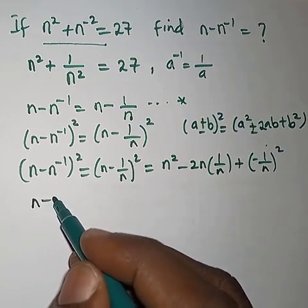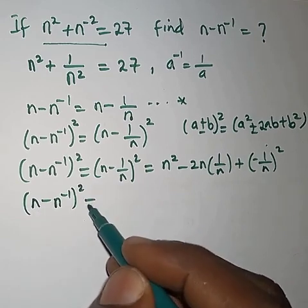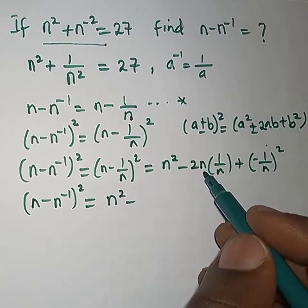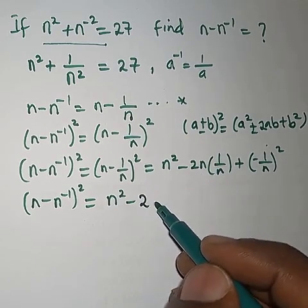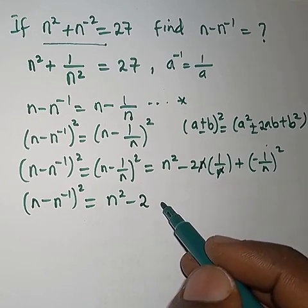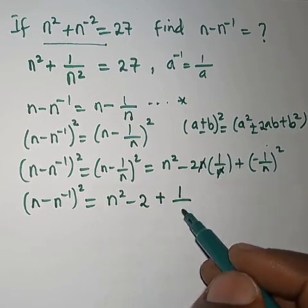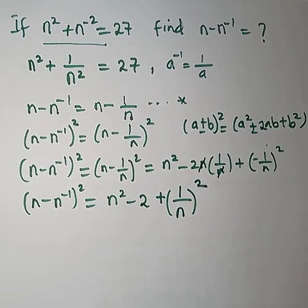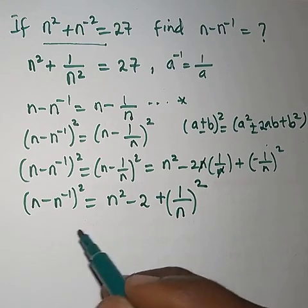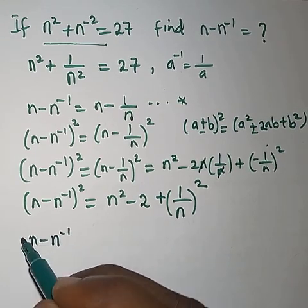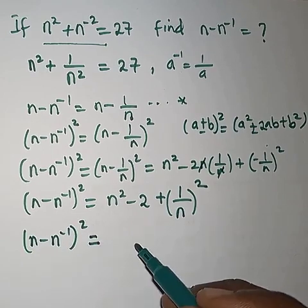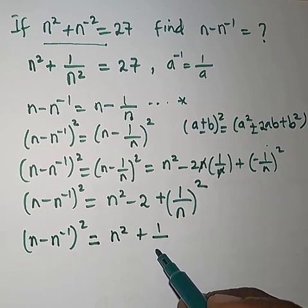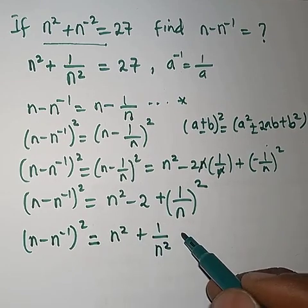So now from here, I have n minus n to the power minus 1, all squared, equals n squared minus 2 — because n cancels with n here — then plus 1 over n squared. So we're going to have n minus n to the power minus 1, all squared, equals n squared plus 1 over n squared, minus 2.